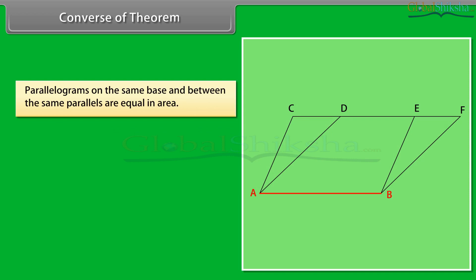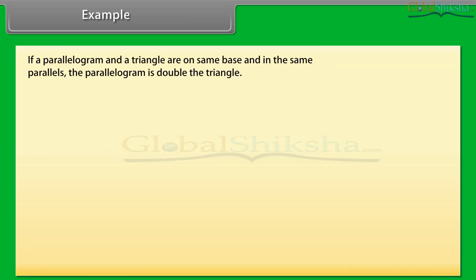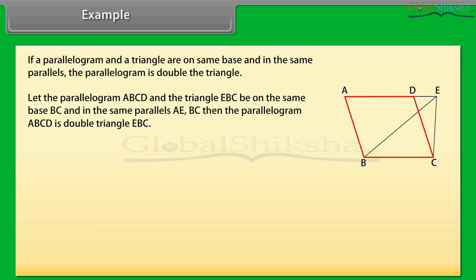Converse of theorem: We have proved that parallelograms on the same base and between the same parallels are equal in area. The converse of this theorem is also true, which says that parallelograms on the same base or equal bases and having equal areas lie between the same parallels. Example: If a parallelogram and a triangle are on the same base and between the same parallels, the parallelogram is double the triangle. Let parallelogram ABCD and triangle EBC be on the same base BC and between the same parallels AE and BC.